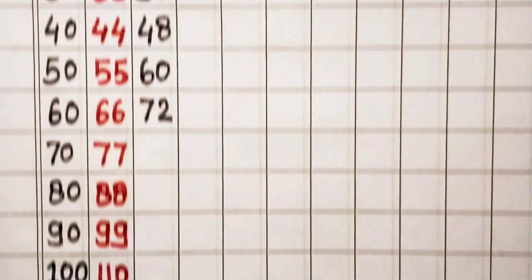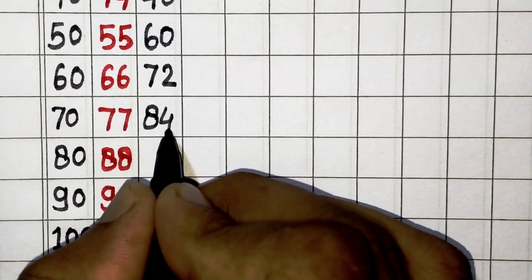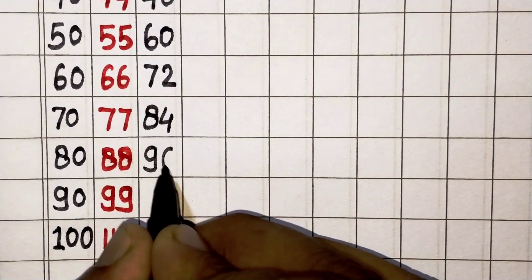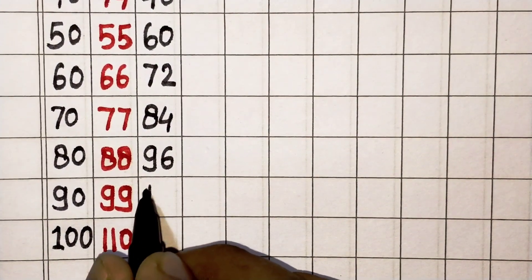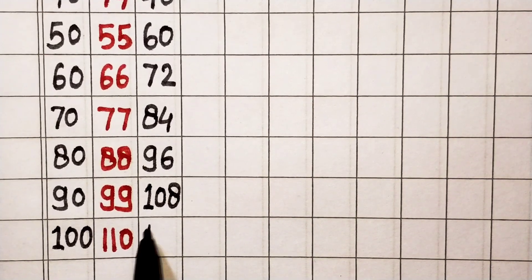12 times 7 is 84, 12 times 8 is 96, 12 times 9 is 108, 12 times 10 is 120.